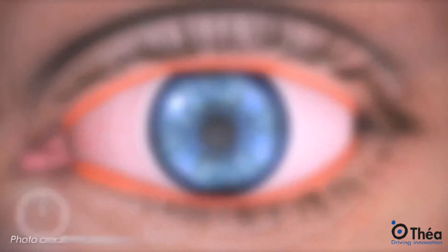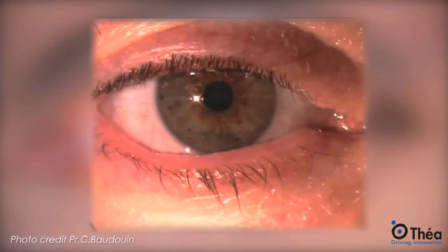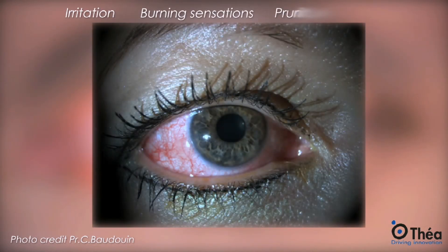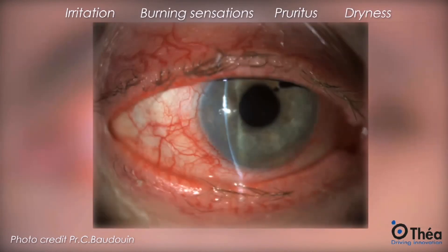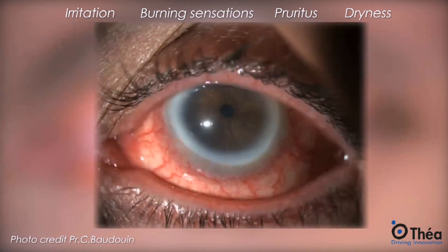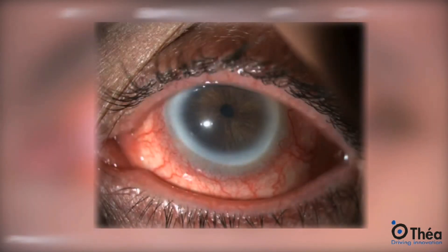For the patient, this phenomena appears as irritation, burning sensations, pruritus and dryness — symptoms which could be minimized by the toxic effect of BAC on the corneal nerves.